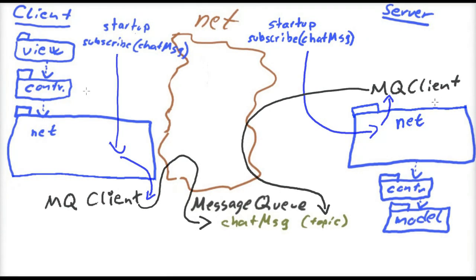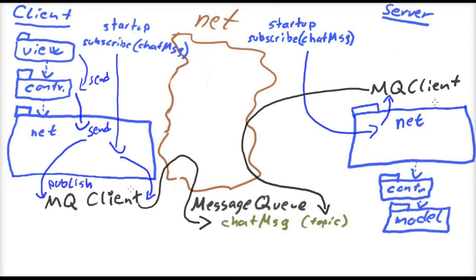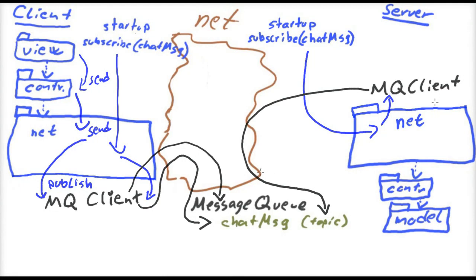Let's see what happens when the client sends a message to all other clients. The view will have instructed the controller to perform the send operation. The controller will forward that call to the net package, and the net package will instruct the message queue client to actually publish the message. The message queue client then performs the publishing of the message to the queue. When the message is published to this topic, it will be delivered to all the subscribers, which are all clients and the server.